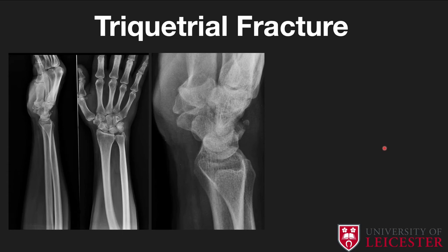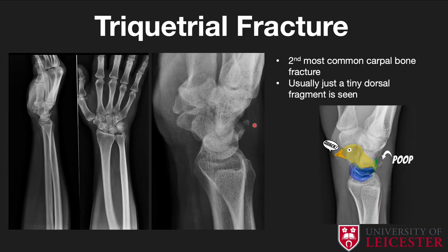The triquetral fracture is unique because it's the only carpal fracture seen primarily on the lateral view. You see a small fracture fragment on the dorsal aspect; on the AP it's difficult to appreciate. The moment you see this, it's pathognomonic for a triquetral fracture. It's the second most common carpal fracture after the scaphoid. A useful sign is the pooping duck sign: the lunate is the nest, the scaphoid is the bird, and the fracture fragment is the poop.